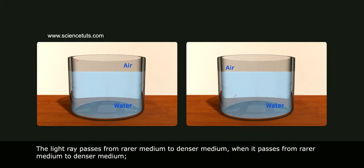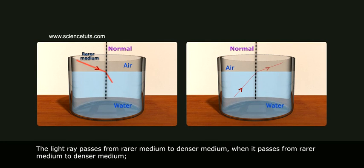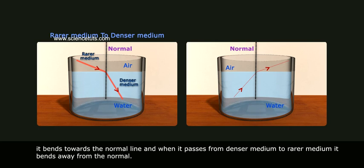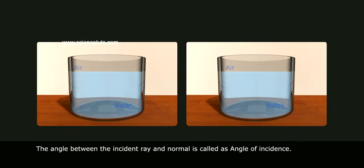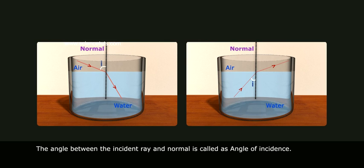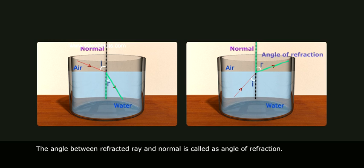When the light ray passes from rarer medium to denser medium, it bends towards the normal line. When it passes from denser medium to rarer medium, it bends away from the normal. The angle between the incident ray and normal is called the angle of incidence, and the angle between the refracted ray and normal is called the angle of refraction.